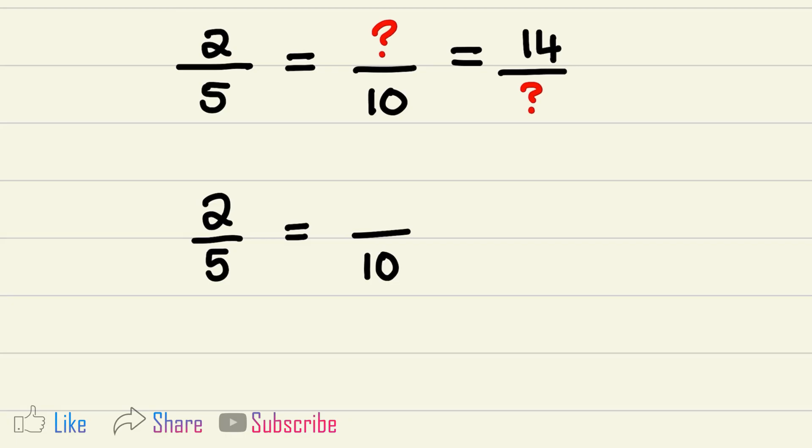Now to find equivalent fractions, what we need to do is figure out by how much we multiply the denominator in order to get to 10. We can see that we have multiplied 5 by 2, which led to 10. What we need to do is do that same calculation in the numerator. So we will multiply 2 by 2, and that will give us 4.